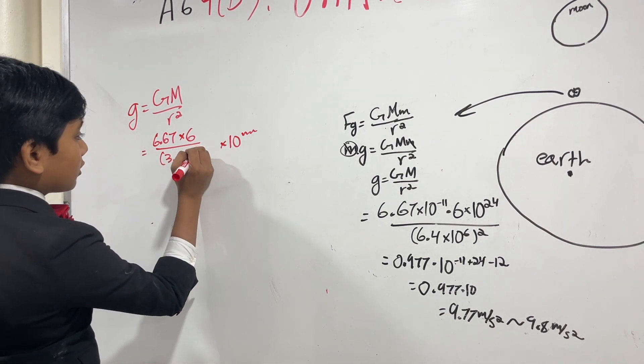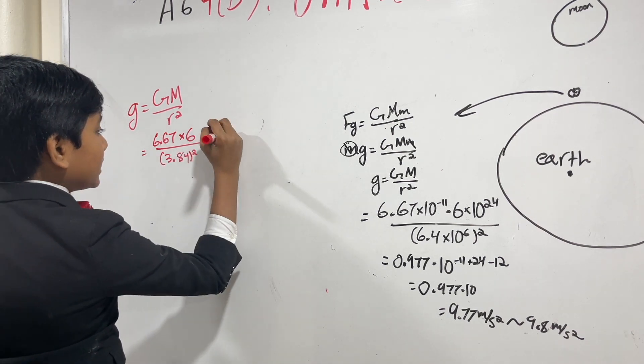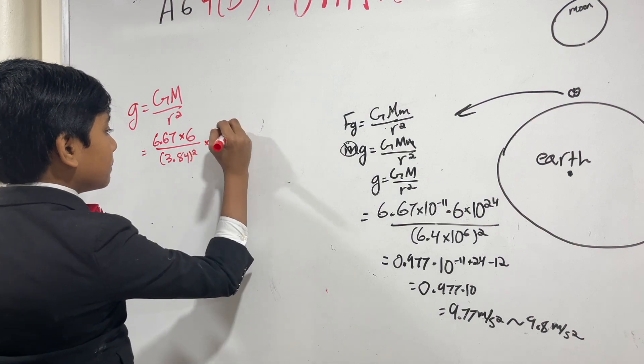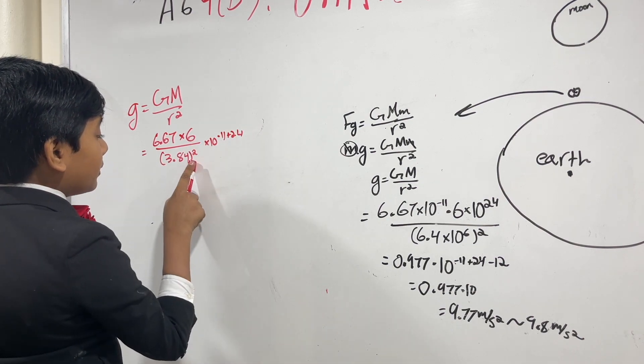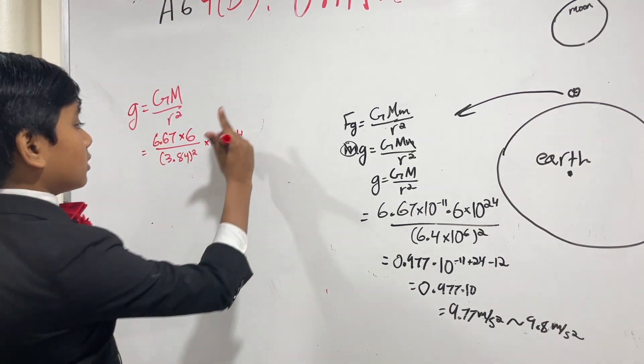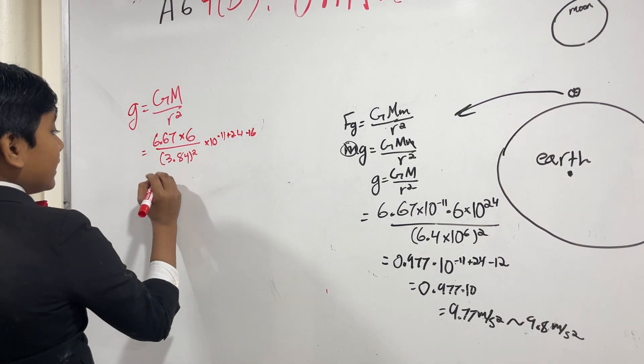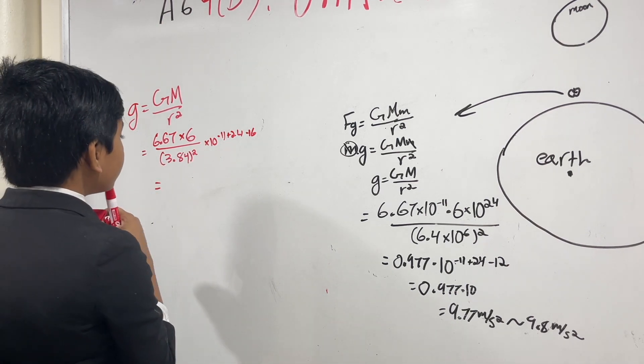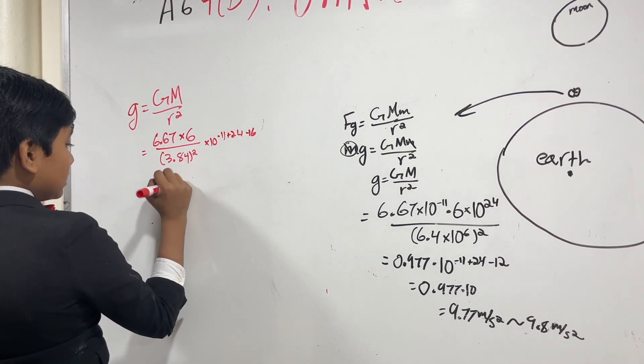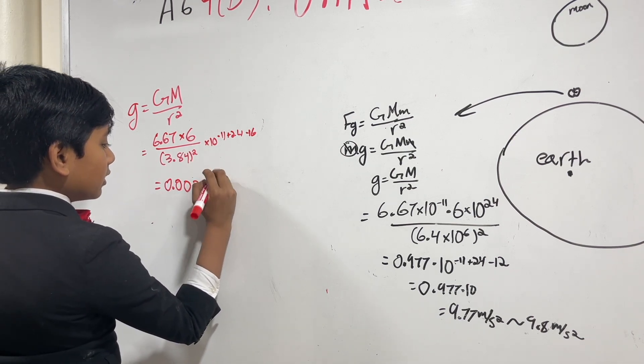3.84 squared times 10 to the... Well, times 10 to the, this would have been minus 11. This would have been plus 24. And this would have been 10 to the 8th squared, 10 to the 16th. Oh wow. So we get from all of this, we will actually get 0.002725.